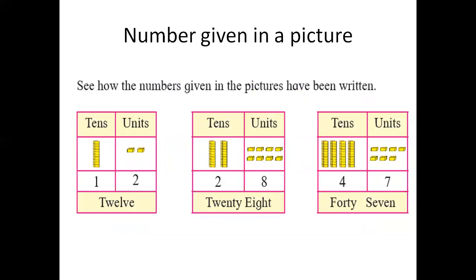Now see how the numbers given in the pictures have been written. In the first picture there are 1 ten and 2 units — 1 ten means 10, plus 2 units, that is 12. In the next picture there are 2 groups of tens, that is 2 tens, and 8 units — that is 28. In the next picture there are 4 groups — 1, 2, 3, and 4 — and 1, 2, 3, 4, 5, 6, 7 single objects, that is 7 units. So 4 tens plus 7 units: 40 plus 7 is 47.